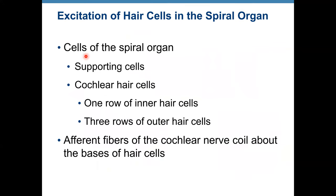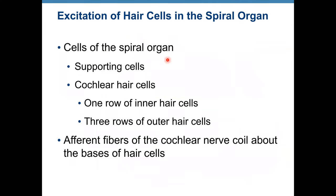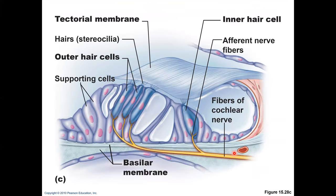The spiral organ, also called the organ of Corti, contains supporting cells and cochlear hair cells. There is one row of inner hair cells and three rows of outer hair cells. Connected to these hair cells are fibers of the cochlear nerve that synapse with those hair cells.